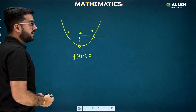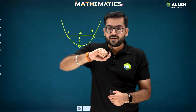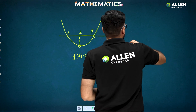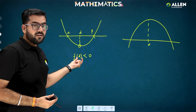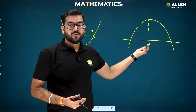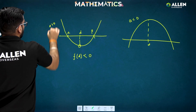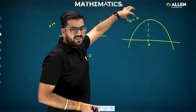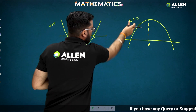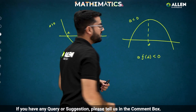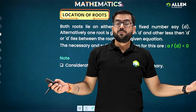Why do we multiply with 'a'? Because there is one more possibility: the parabola may open downward. In that case, at d you get a positive value, not negative. But we still need f(d) < 0 in conclusion. That's why we multiply by 'a': if a < 0, then a·f(d) gives negative × positive = negative, which is still less than zero. So in all cases, a·f(d) < 0 holds.